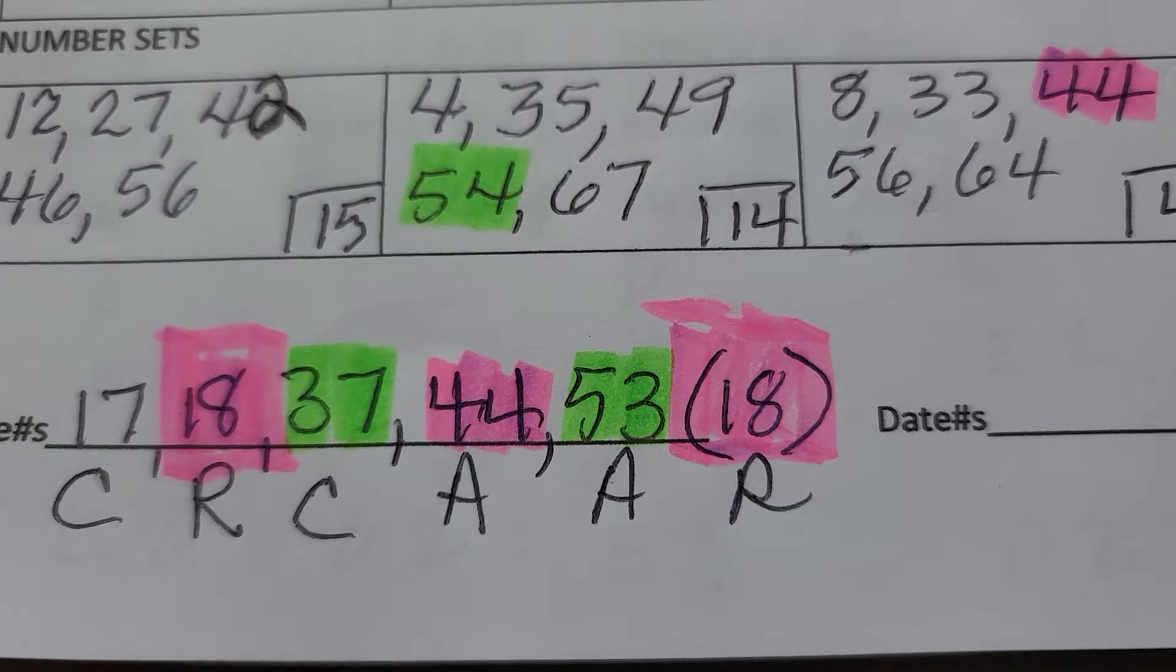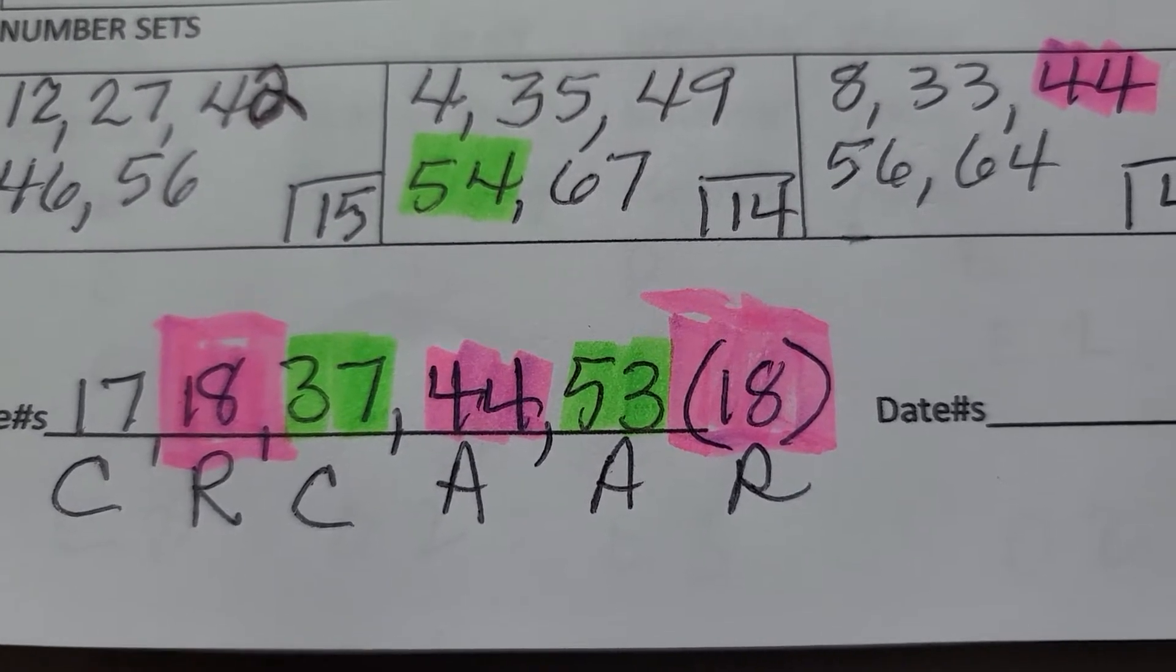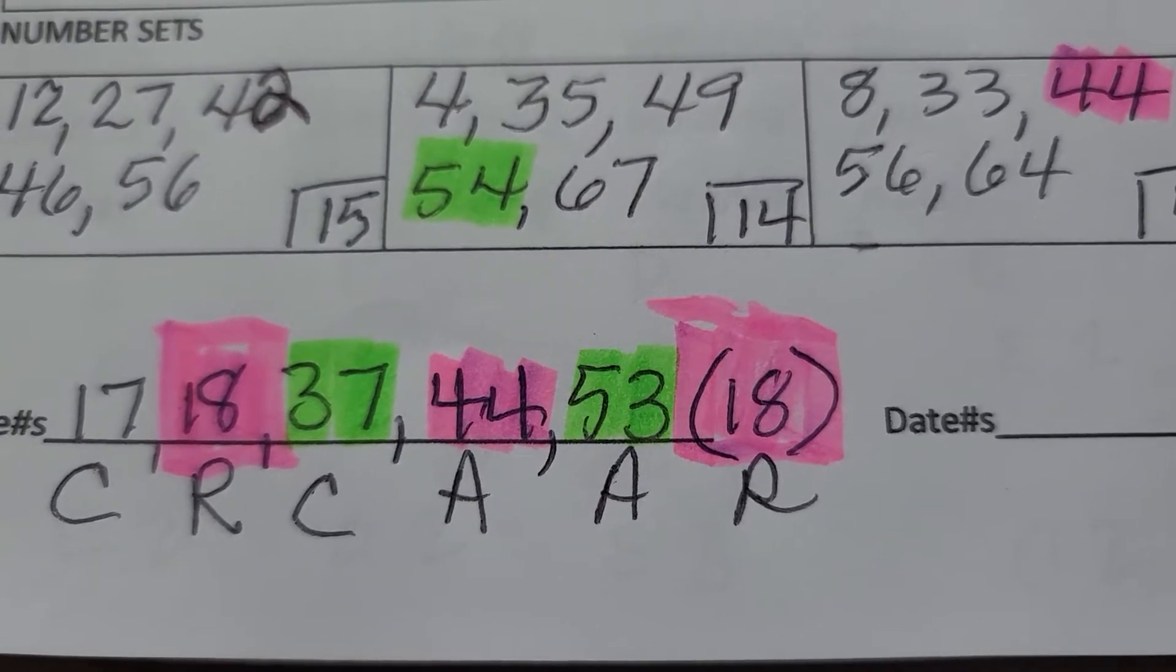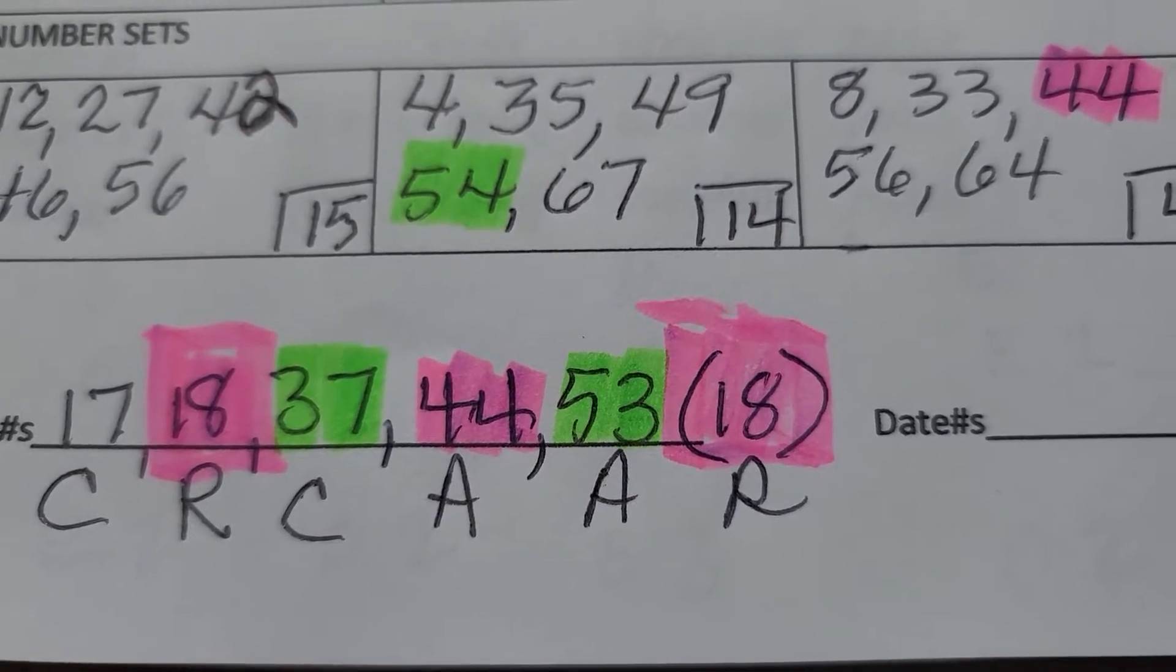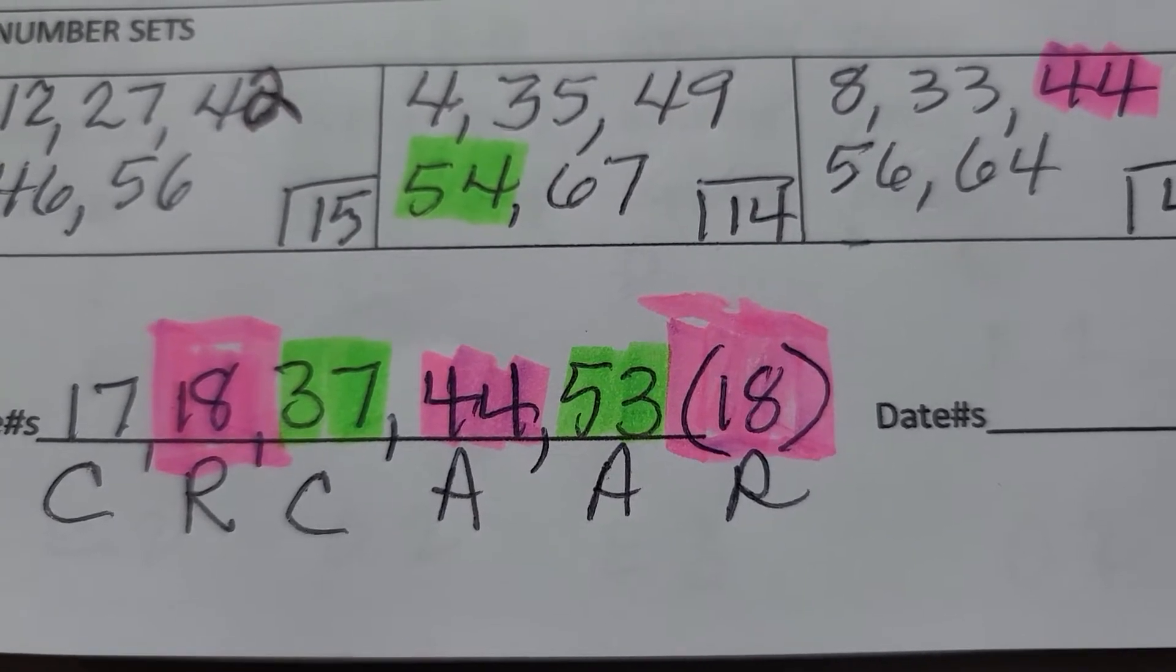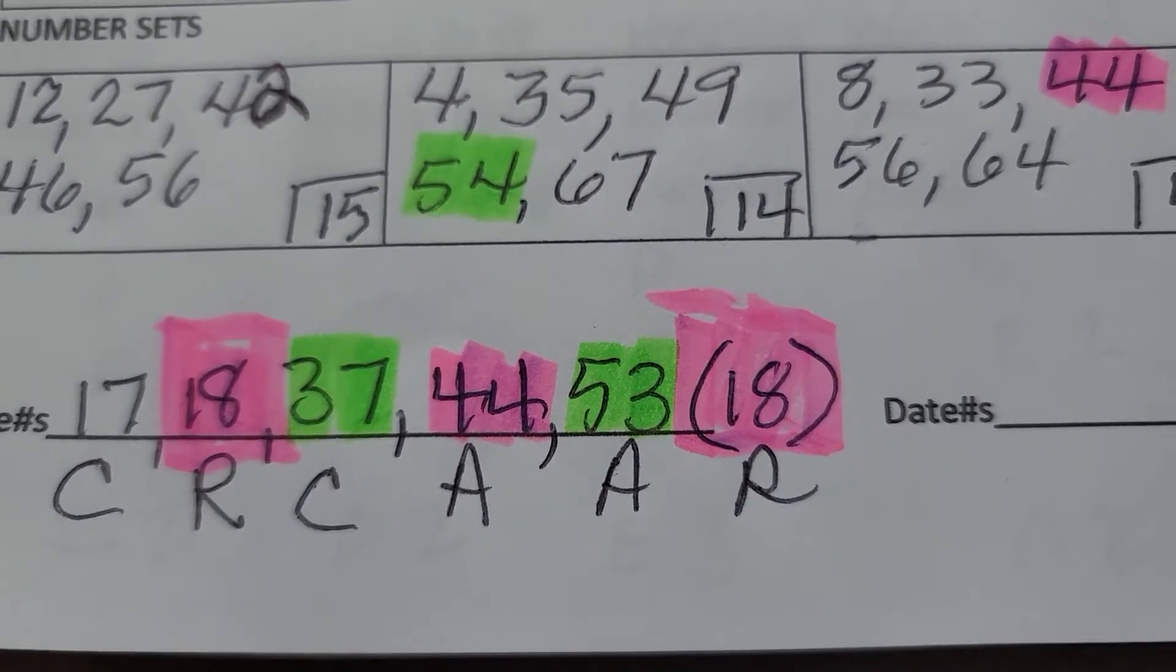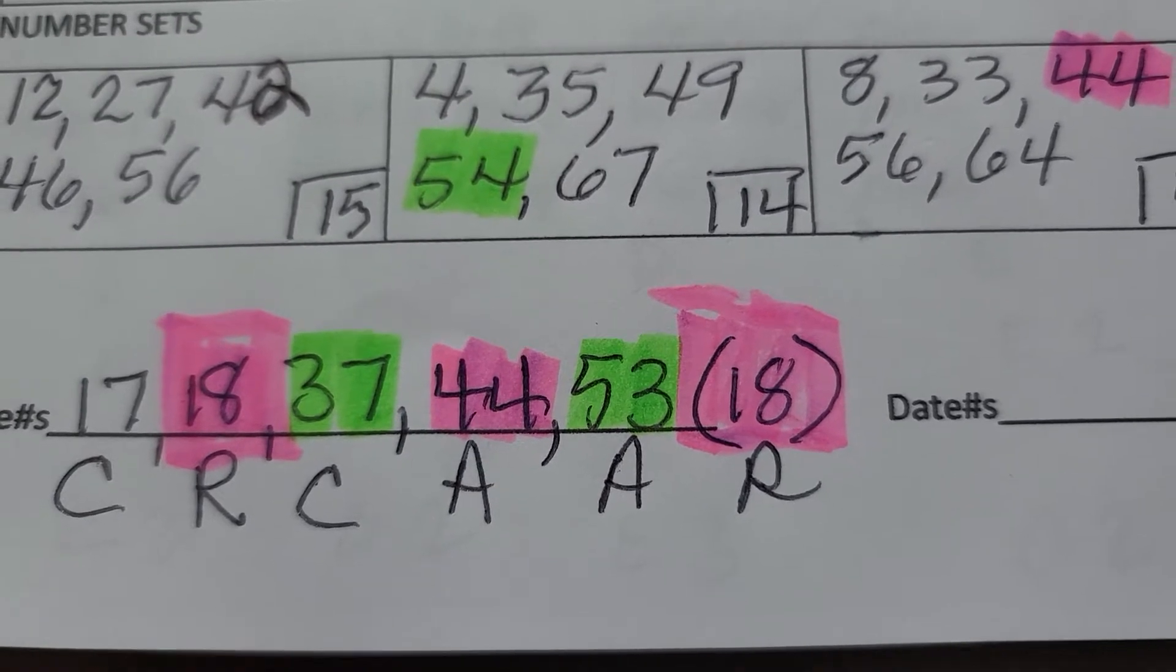18 was a returning number that returned after being gone for more than 20 games, while 44 and 53 were repeating numbers from the last four games, and 17 and 37 were numbers repeating after about 12 games.